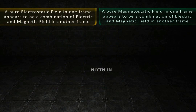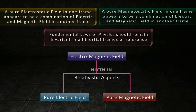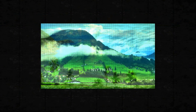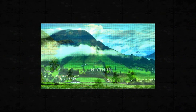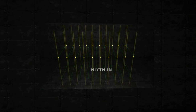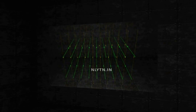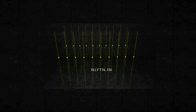Since looking at a situation from a different frame of reference cannot change the fundamental nature of fields, this tells us that electric and magnetic fields are just relativistic aspects of a single electromagnetic field. The situation is similar to a holographic picture, where we see one picture from one point of view and another picture from a different point of view, but overall it is a complex entanglement of both pictures. Similarly, what we may see as a pure electrostatic field in one frame of reference and a pure magnetostatic field in another is actually a complex entanglement of both, which we call an electromagnetic field.